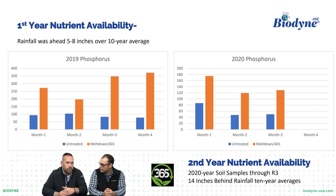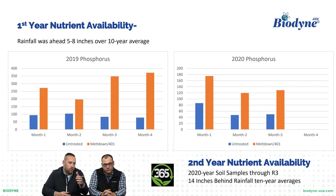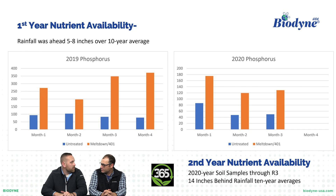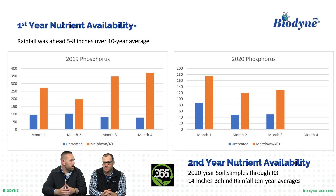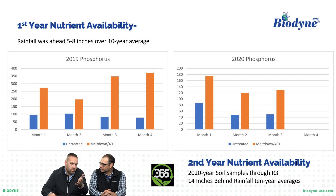Here's a study — this is the first year, 2019, of a three-year study. On the left, rainfall was five to eight inches above the 10-year average. On the right we're looking at 2020. The interesting thing about 2019 versus 2020 is — five to eight inches over average in 2019, and we know the only thing that remains the same in agriculture year over year is that everything's different. In 2020 in Iowa, they were 14 inches behind their 10-year average — a surplus to a deficit in a hurry. In 2019, with conditions that were ideal, microbes need moisture to remain active, and you can see month one, month two, month three, and month four — there's a significant advantage that the meltdown 401 combo brings over the untreated or the grower standard.